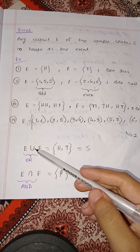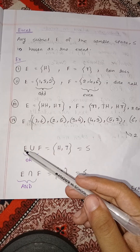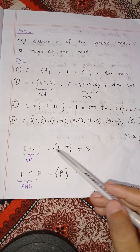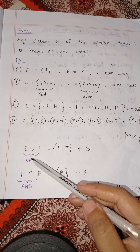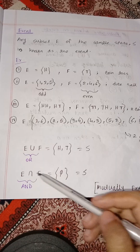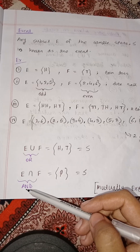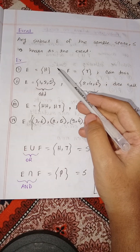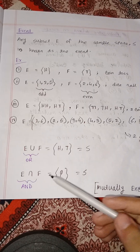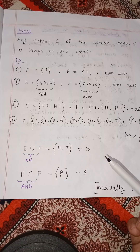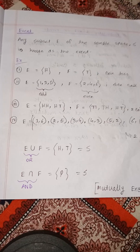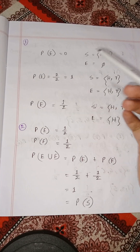Mutually exclusive means E intersect F equals the empty set. When we take the union of mutually exclusive events, the probability of their union equals the sum of their individual probabilities. This is the condition for mutually exclusive events in probability theory. So the probability is defined on events according to these three conditions.